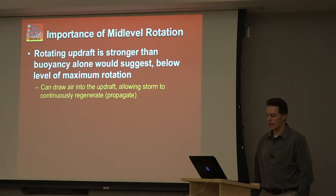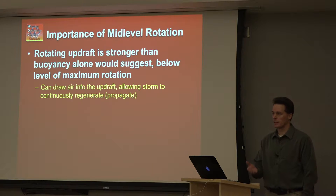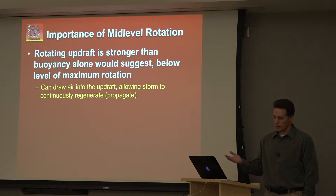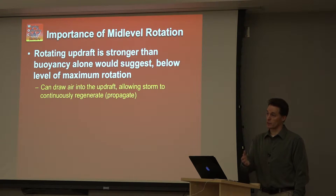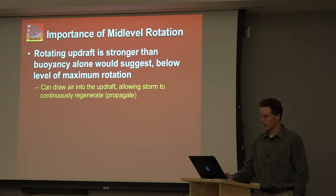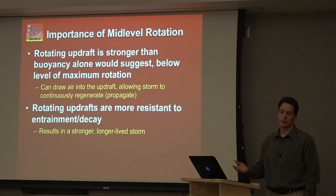Why does mid-level rotation matter? A rotating updraft is actually stronger than a non-rotating updraft, specifically below the level of maximum rotation. This is related to pressure perturbations that develop in response to the rotation — the storm actually draws air in from below. That drawing of air in from below is related to stretching potential, so we can create, due to storm dynamics, a stronger updraft lower in the troposphere, and that is actually helpful for tornado genesis. Rotating updrafts also tend to persist longer, are resistant to decay, and you end up with a longer-lived storm, which gives you more opportunities to produce tornadoes.